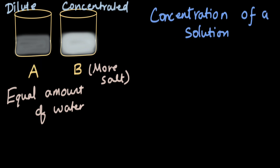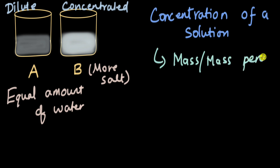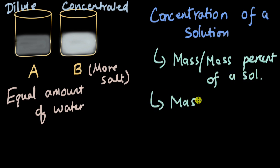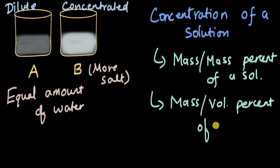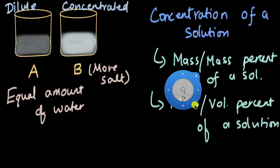The concentration of a solution can be measured in two ways. One is mass by mass percent of a solution, and the second is mass by volume percent of a solution. Let's look at each of them.